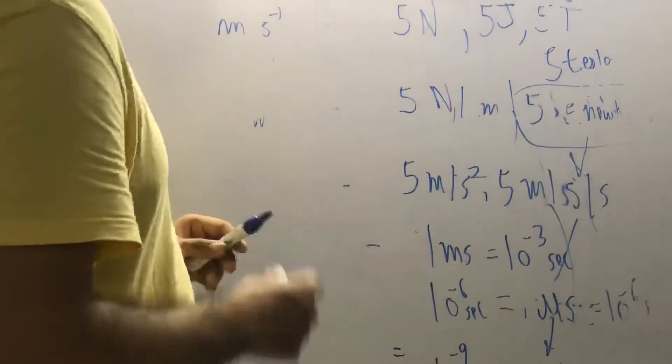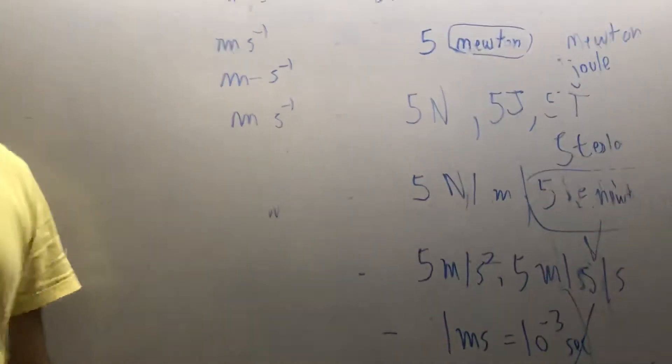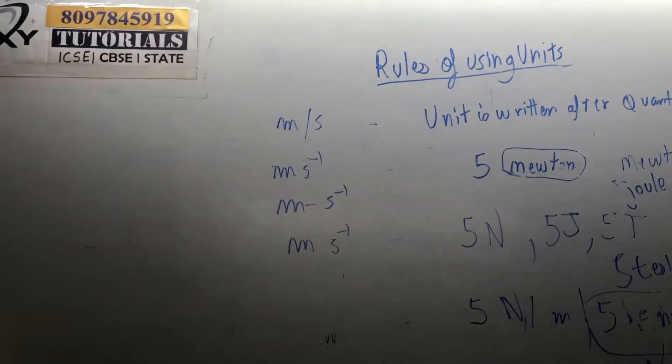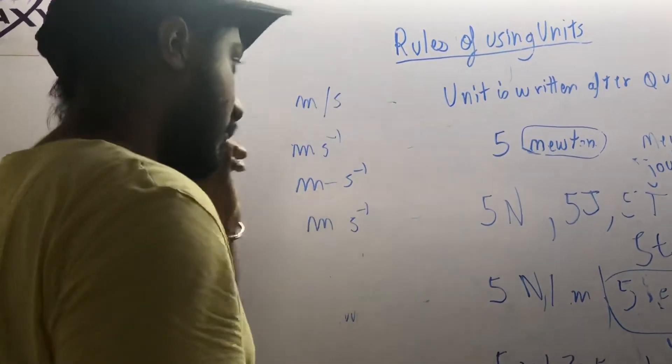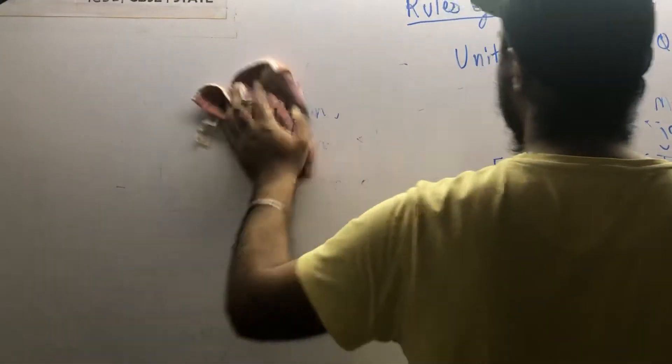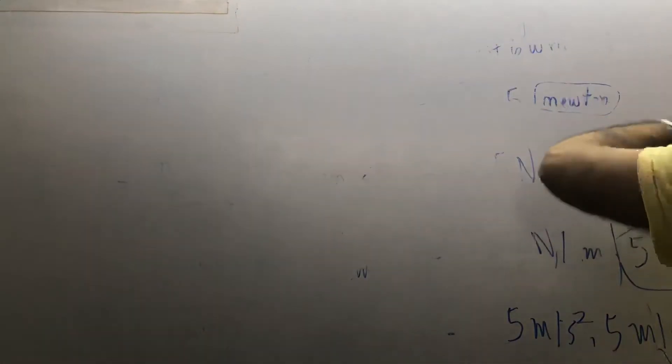So these are eight rules that are very important when you are writing SI units. Now let's move on to the next topic: the parallax method. This is an important method.